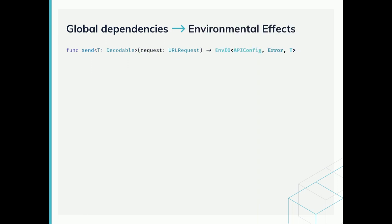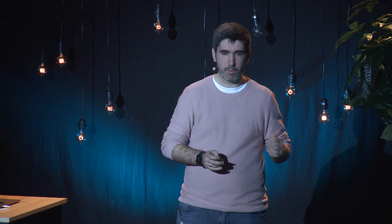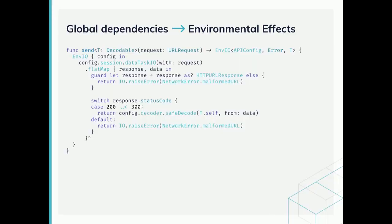We can even group this configuration into the return type, thanks to the environmental effect type included in Bow. This type represents a suspended side-effectful operation that has a dependency on an environment — in this case the API configuration — and will eventually provide either an error or a value. With this change, our networking functions now only need to receive the parameters they need to do their job, and supplying the dependencies can be postponed to a later moment.